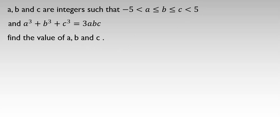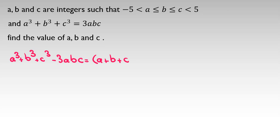For solving this problem, you should know an important identity: a cubed plus b cubed plus c cubed minus 3abc equals a plus b plus c times a squared plus b squared plus c squared minus ab minus ac minus bc.